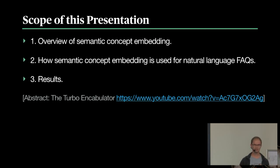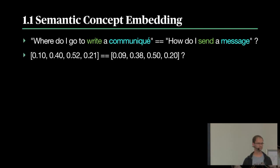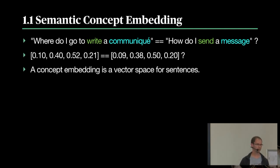Semantic concept embedding: if I were to give you a sentence such as 'where do I go to write a communique' or 'how do I send a message?' — how do you measure the distance or semantic relatedness between these two sentences? If you transform sentences into numerical vectors, it becomes much easier to say whether those vectors are close together or not. The idea is to create a vector space within which you can represent sentences in this form.